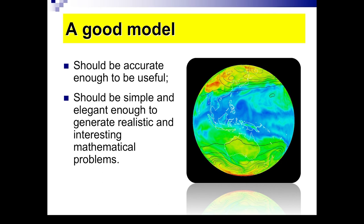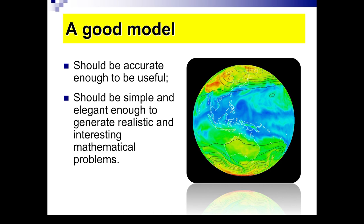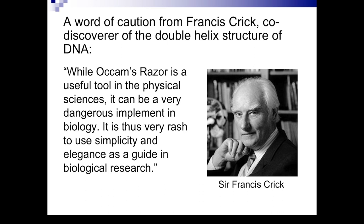This is important because although you may want your model to be very realistic, that will only make the model very complicated, which makes it mathematically harder to understand or to analyze. A good model should be accurate. It should be accurate enough to be useful. On the other hand, it should be simple and elegant enough to generate realistic and interesting mathematical problems. Occam's razor is a principle particularly relevant to modeling. The essential idea behind Occam's razor is that among models with roughly equal predictive power, the simplest one is the most desirable.